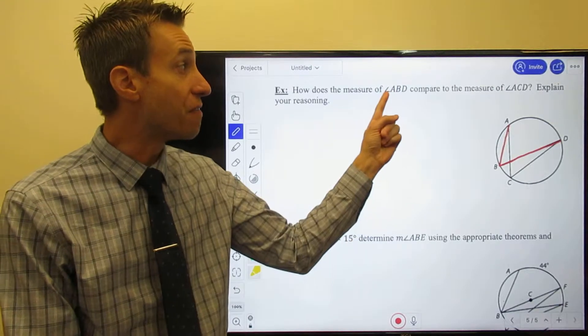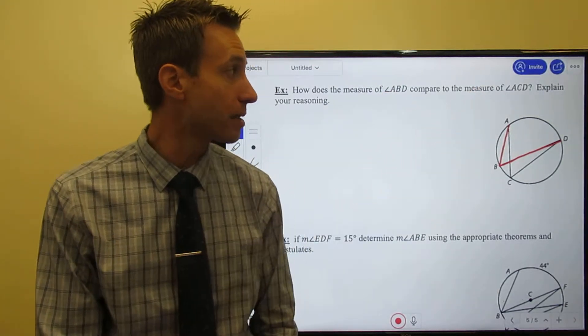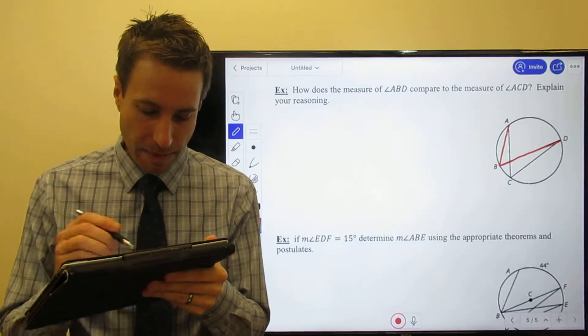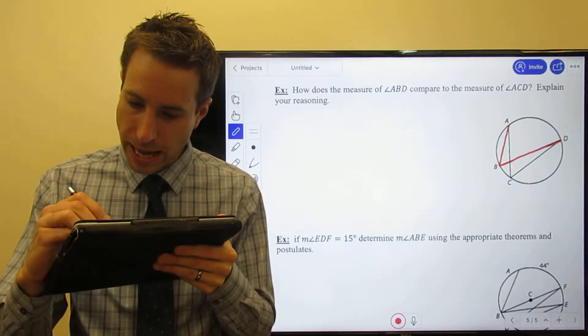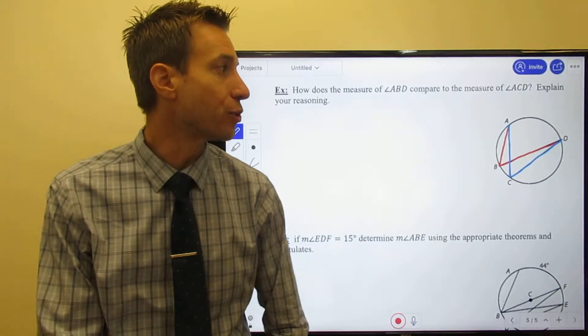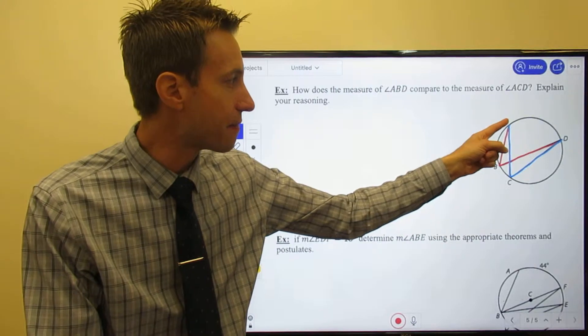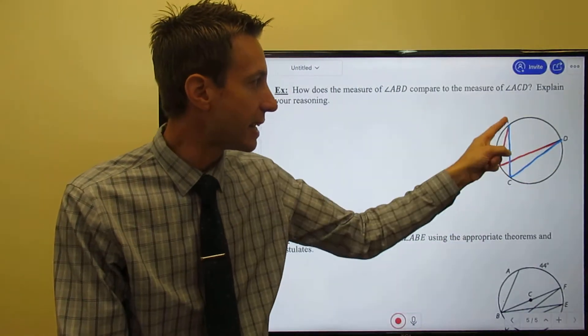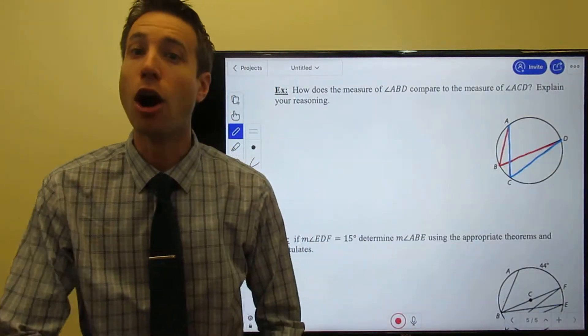How does the measure of that angle compare to the measure of ACB? Well, here is ACD, right? Hopefully you can see those two different angles. I have ABD and ACD. Okay, great.